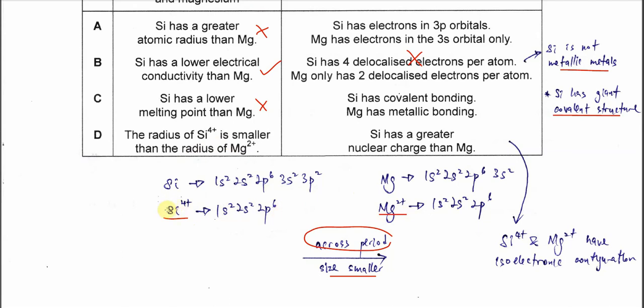Silicon has a higher proton number, so the size of the silicon ion must be smaller. This explanation is correct. The statement is correct and the explanation is also correct because the nuclear charge is greater than magnesium. Therefore the answer is D.